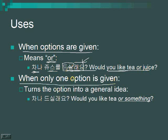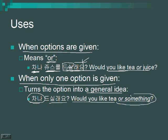When only one option is given with 이나, it turns the option into a general idea. So 차나 드실래요? means 'Would you like to drink tea or something?' — essentially opening up any option. It's like asking 'Do you want to drink anything?'